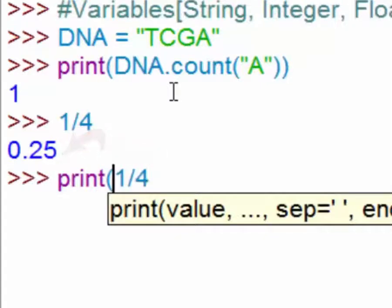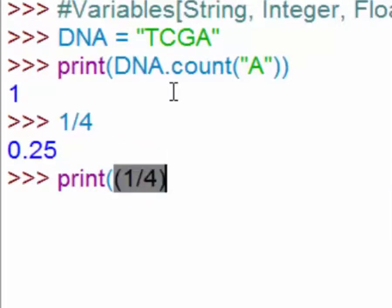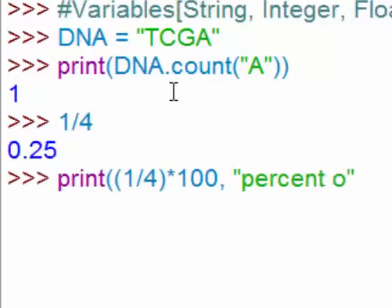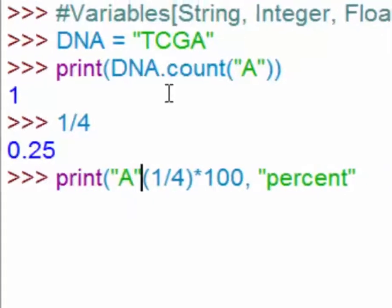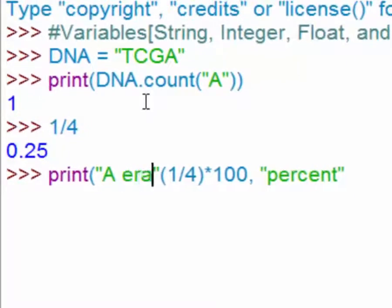If you write print((1/4)*100) and concatenate this with a string saying "percent", you could say that A ratio is (1/4)*100 percent.